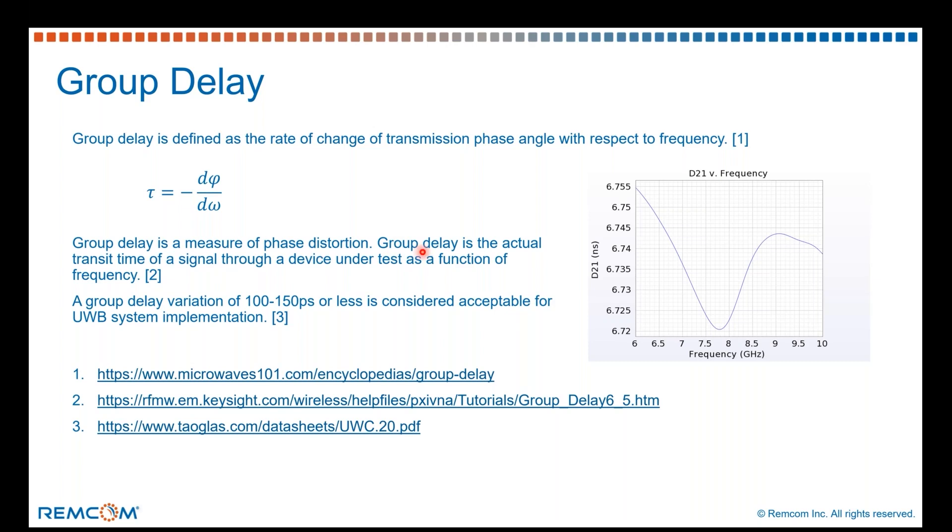So if we go on, we can say that antenna group delay, or just group delay in general, is the actual transit time of a signal through a device under test as a function of frequency. The group delay is a result that XF has had for 15-20 years - the group delay itself is not new to us, and so we have group delay as a result that's available in XF.